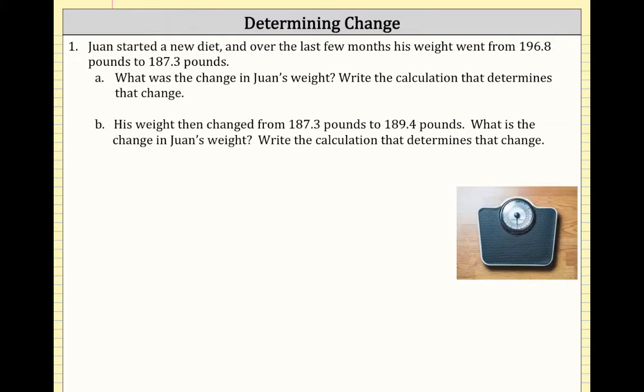Let's look at this first example. Wan started on a new diet, and over the last few months his weight went from 196.8 pounds to 187.3 pounds. The first part asks what is the change in Wan's weight. The quantity we're measuring is weight, and the units it's measured in is pounds.